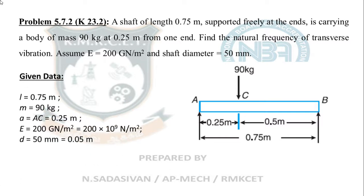List down the given data. Length of the shaft is 0.75 meter. Mass acting in the shaft is 90 kg. a and b, I am going to split and write the distances. Small a, I am going to call this distance as small a, from the left end to this is small a. And from here to here is called small b. Because you are having a and b in the formula, where a is this length and b is this length. Young's modulus and the diameter of the shaft, everything is written.